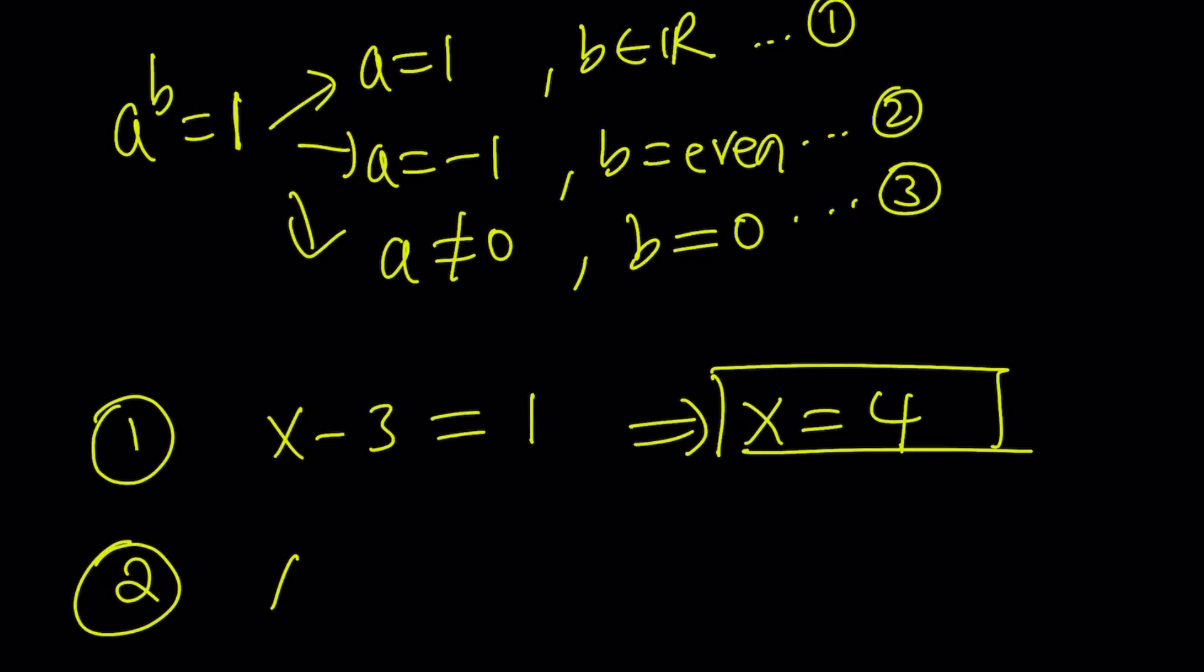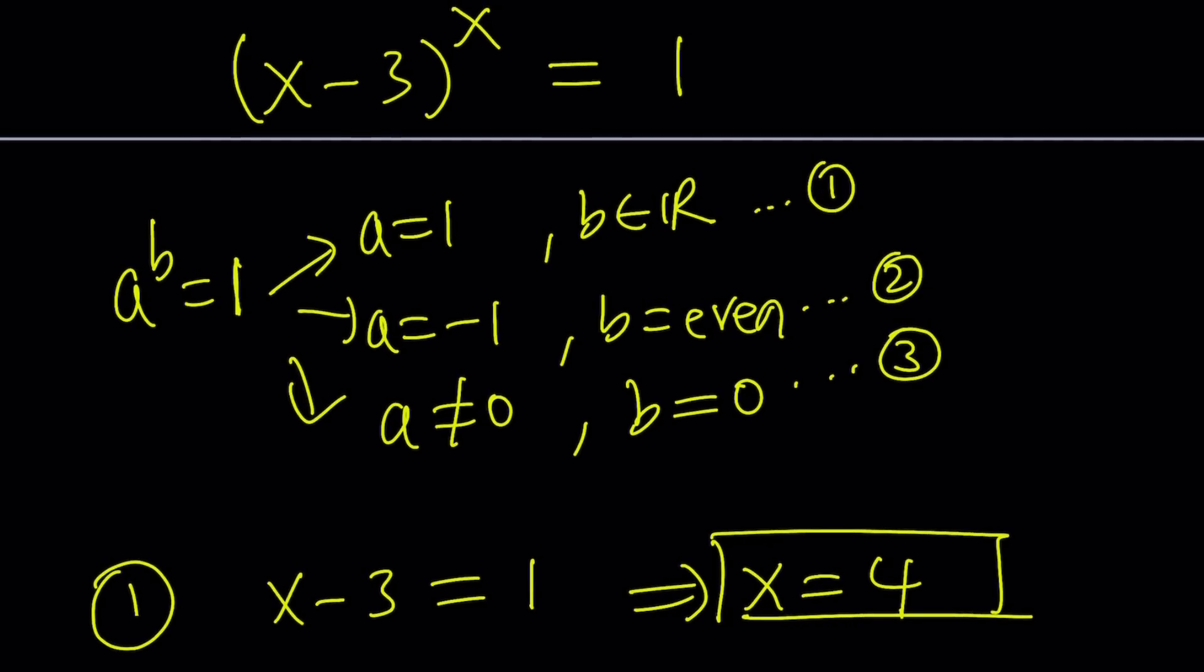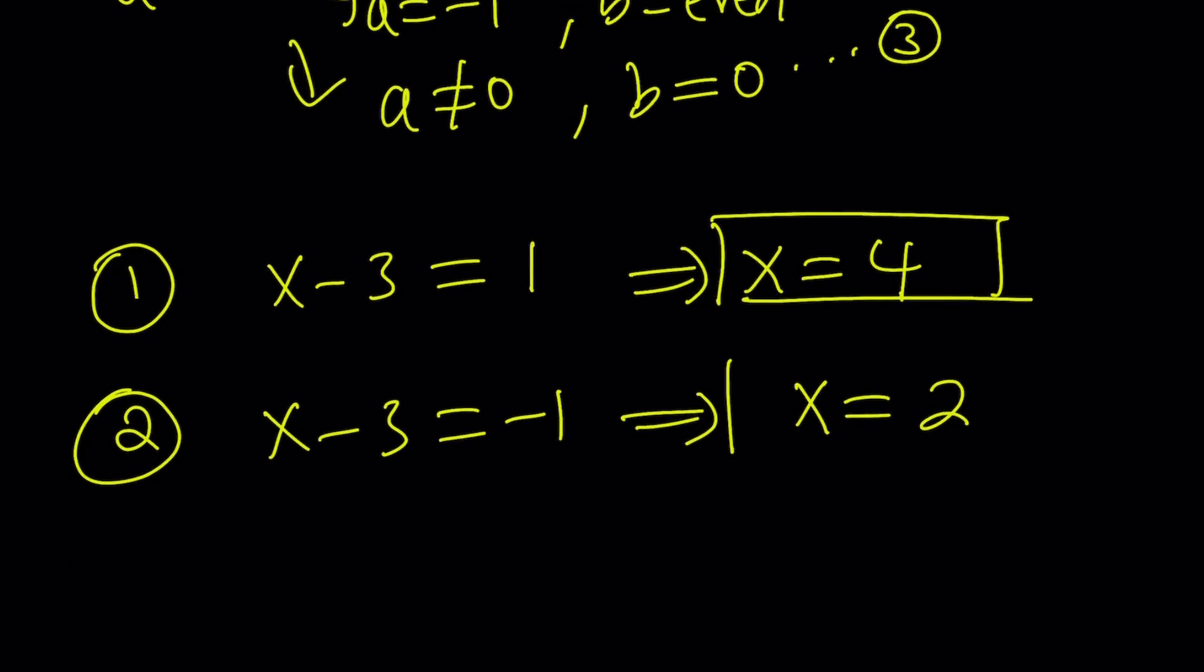Second case. a is negative 1. x minus 3 is negative 1. This implies x is 2. Now, remember, x is the exponent, or b. And that must be even. Is 2 even? Yes. This is even. So we're happy. So that works.